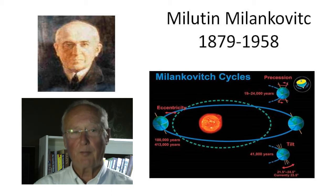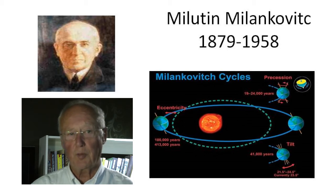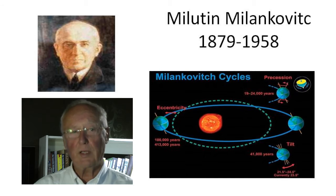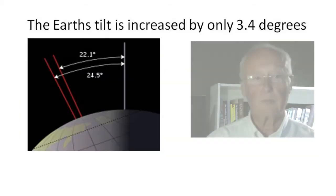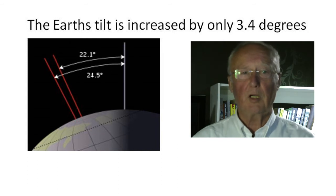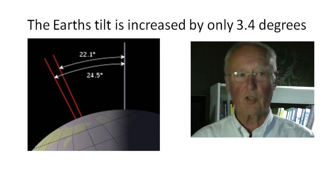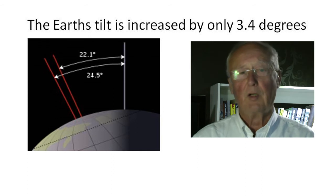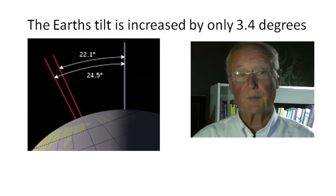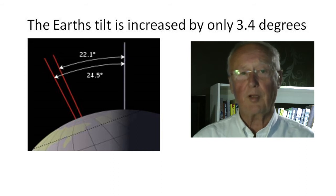In a very simplified explanation, Earth goes round the sun in an elliptical orbit and so does Jupiter. About every 125,000 years, Earth gets closer to Jupiter. The powerful magnetic force of Jupiter holds the Earth over sideways to increase our angle of tilt from 22.1 degrees to 24.5 degrees. This tilt action is very slow and happens over about 50,000 years, giving plenty of time for the effects to take place.